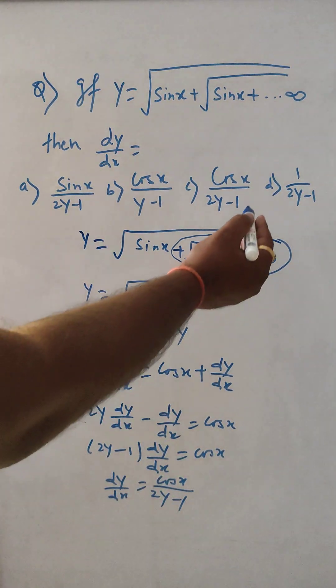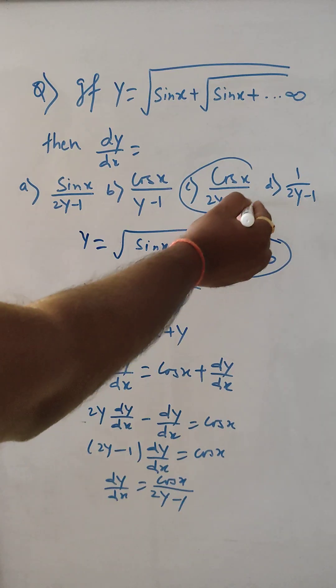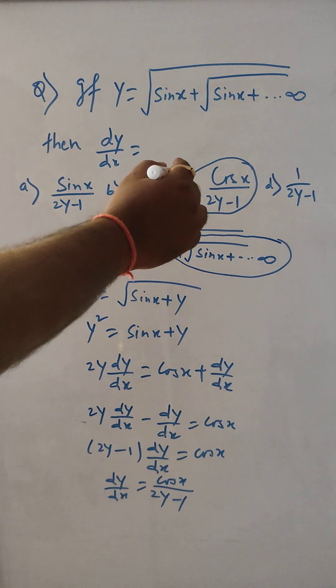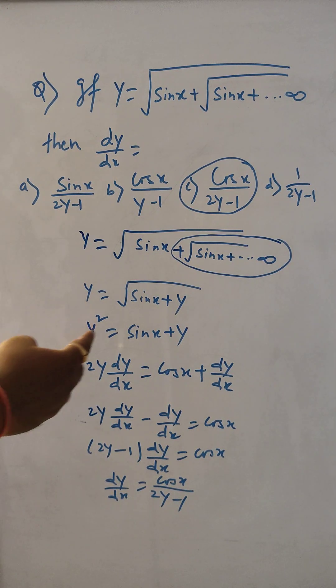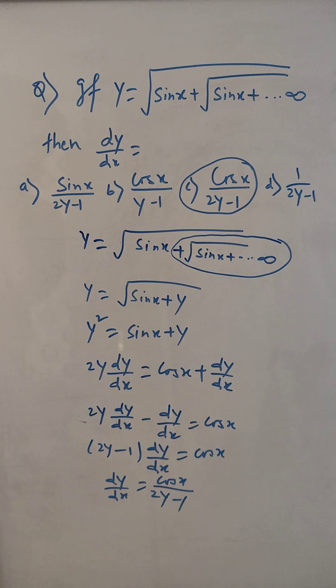So cos x divided by 2y minus 1 — that is the value we got for dy by dx. So this means option c is the correct option.